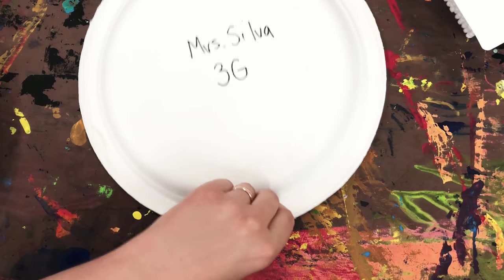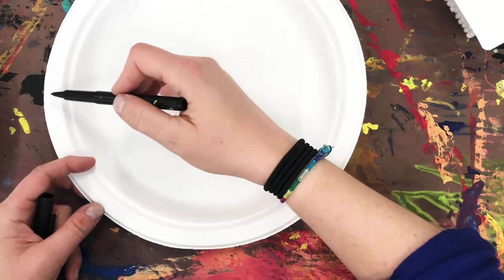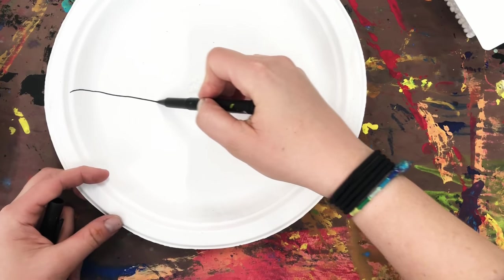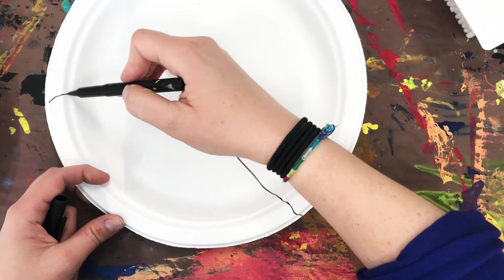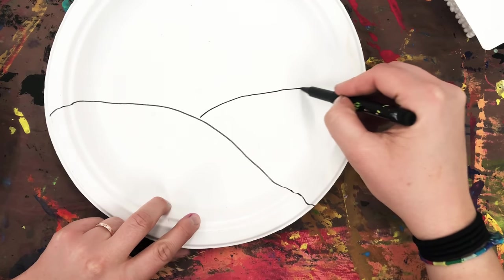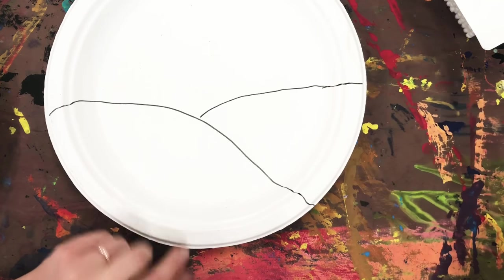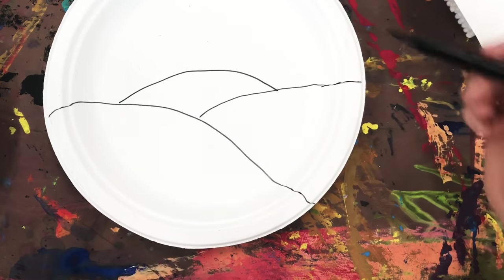Then you're going to turn your plate over and you're going to draw some hills. I'm going to start with a big hill in the foreground, and my lines can go all the way off my plate. Then I'm going to have a medium hill, and then I'm going to do a small hill in the background.